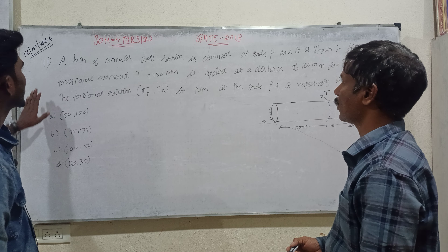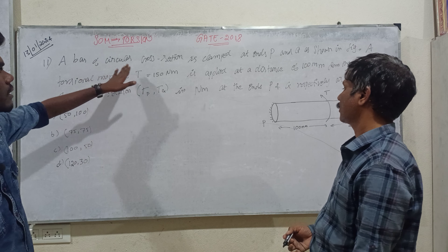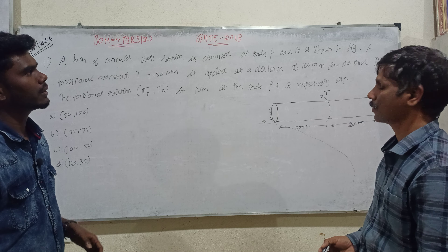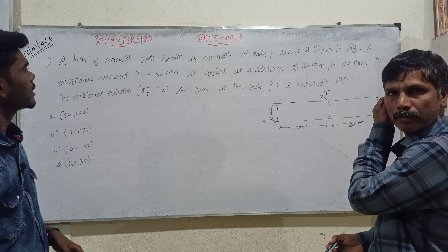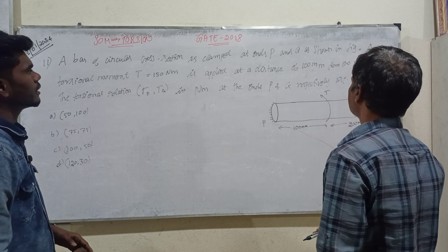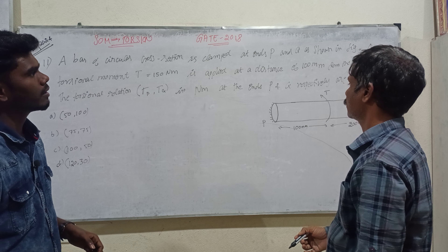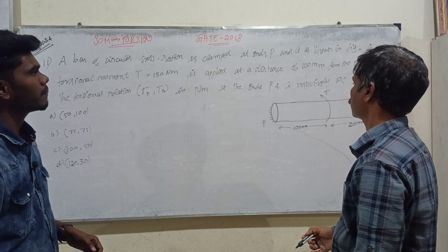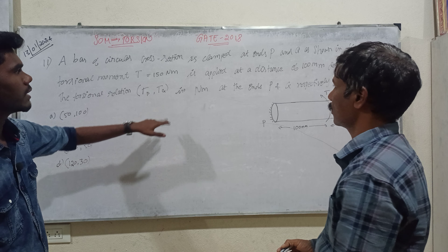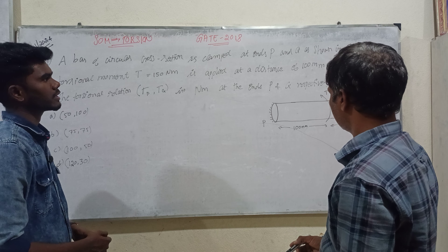Let me talk about the problem. A bar of circular cross section is clamped at the end P and Q as shown in the figure. A torsional moment T equal to 150 Nm is applied at a distance of 100 mm from the end P. Find the torsional reactions Tp and Tq in Nm at the ends P and Q respectively.